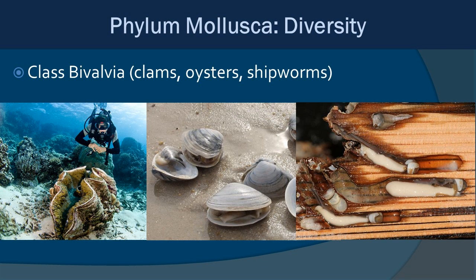Class Bivalvia is known for having a two-valved shell — two halves. Here are familiar things like clams and oysters, and on the right something less familiar: shipworms. They bore into wood — driftwood or ships, which is how they got their name — and start to degrade it, making them actually important to the system as well.